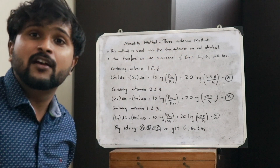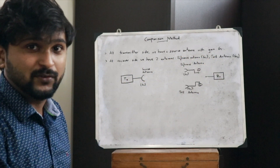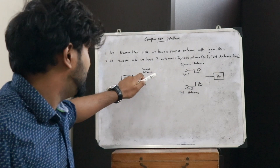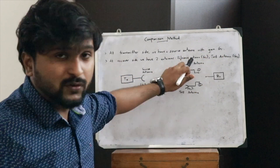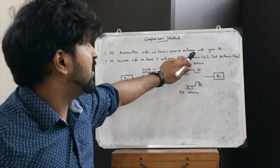That sums up how we calculate the gain using the three-antenna method under the absolute method. Now we move on to the comparison method for finding the gain of a particular antenna. For the comparison method we need three antennas: one source antenna, one reference antenna, and the test antenna whose gain we have to find. At the transmitter side we have the source antenna with gain G1, and at the receiver side we have two antennas — the reference antenna with known gain G2.